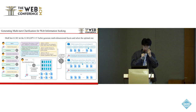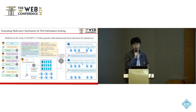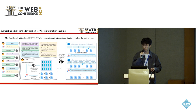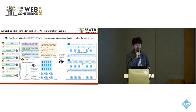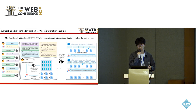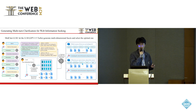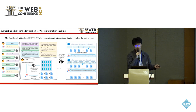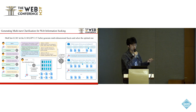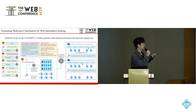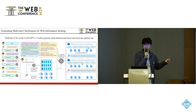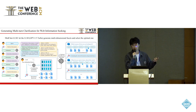The rule-based method is weak at capturing contextual information. Since large language models have succeeded in many information retrieval tasks, we also applied an LLM-based method to generate multi-dimensional facets and select the optimal one. In this process, for both generation and selection, we provide the LLM with several demonstrations to guide it on how to generate multi-dimensional facets and which one to select.